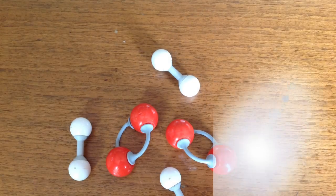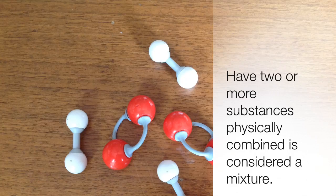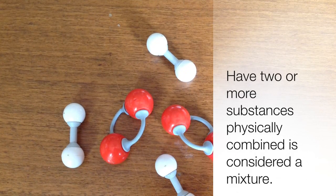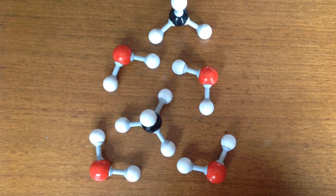A mixture contains two or more types of substances that are not combined, but just physically in the same space, as you see here with the red element and the white element. And this is a mixture of two different compounds.